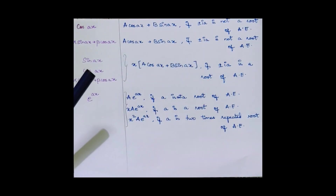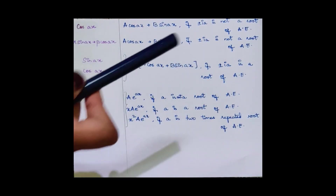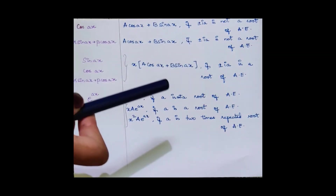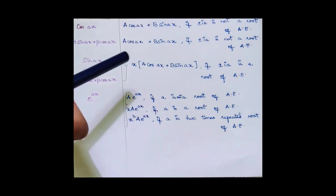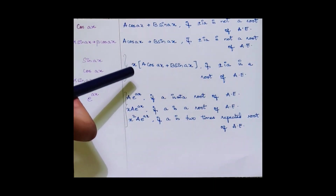If ±ia is a root of the auxiliary equation, then you have to multiply the above obtained format by x.